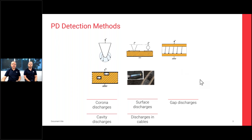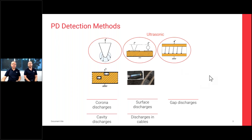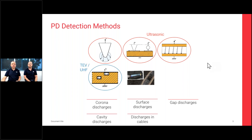We also have discharge that happens in cables — down the cable itself or in joints down the cable network. Ultrasonic techniques are applicable to finding corona discharge and surface discharge, and will also find contact or gap-type discharges provided there's an air gap between the item under test and the microphone.